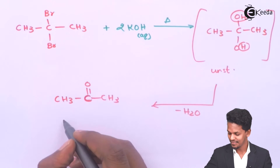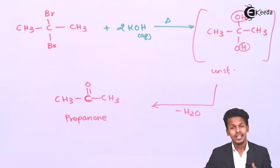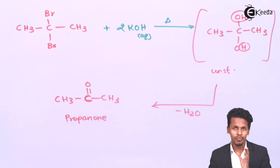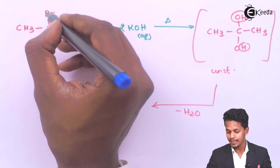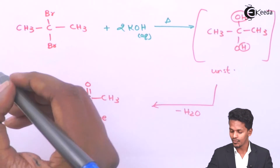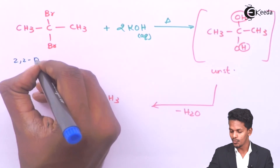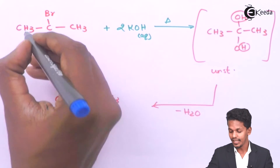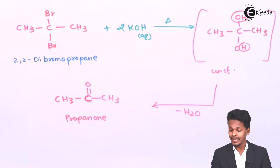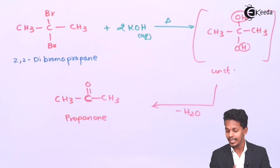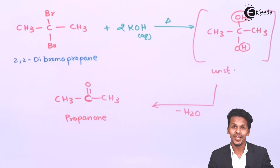The product CH₃COCH₃ is nothing but acetone, also called propanone. The reactant used is 2,2-dibromopropane, since the bromine atoms are attached to the second carbon atom. Thus, 2,2-dibromopropane undergoes hydrolysis to give propanone.